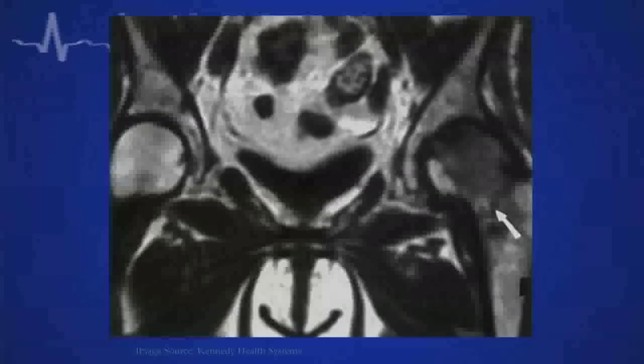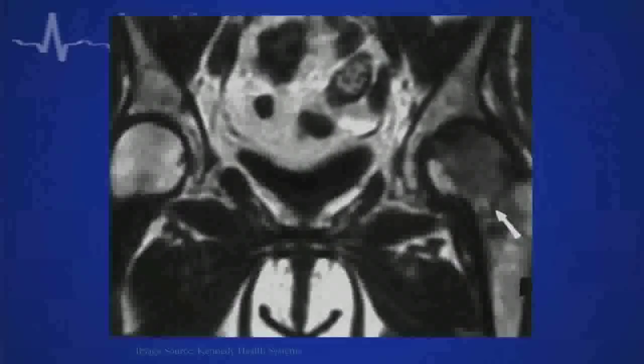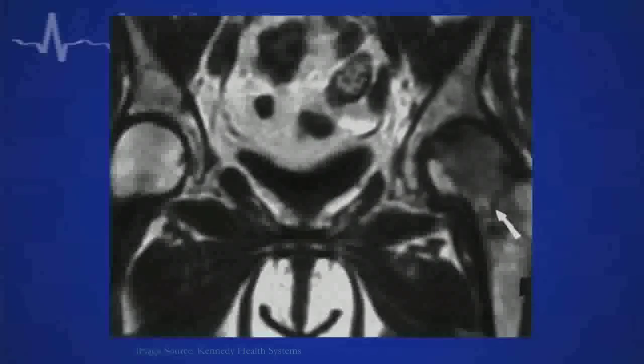Remember the normal film from initial presentation — looking at the area of the hip, you wouldn't call that a fracture even retrospectively, knowing where it is. On MRI, there it is. MRI is sensitive because it picks up edema in the fat areas of the bone structure, which conventional radiography doesn't pick up. That's why it's the modality of choice.